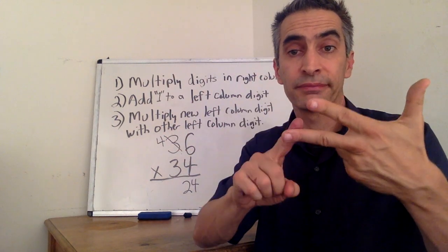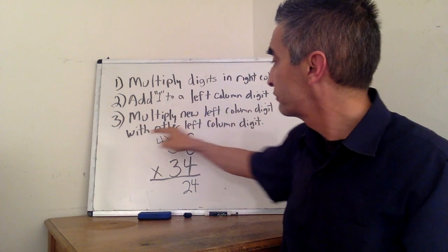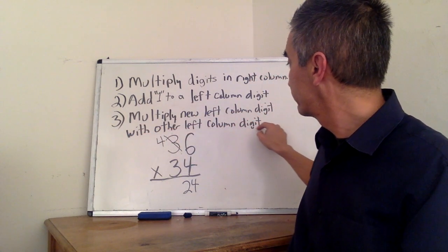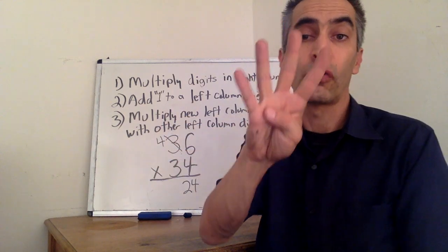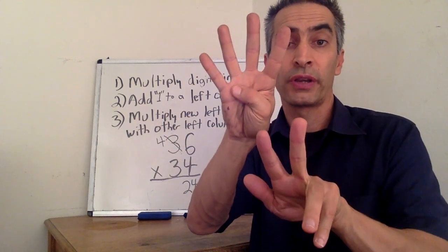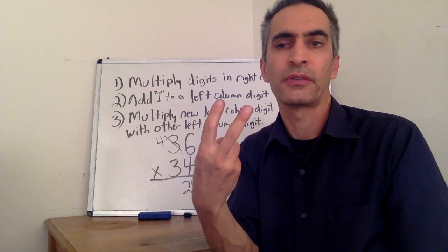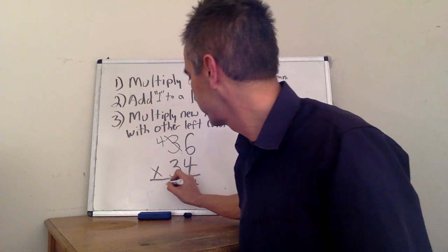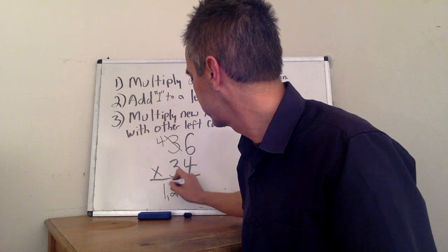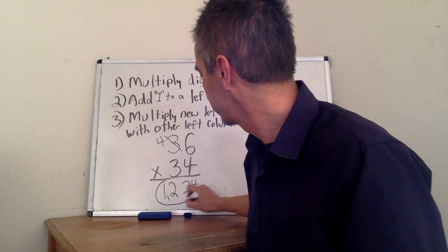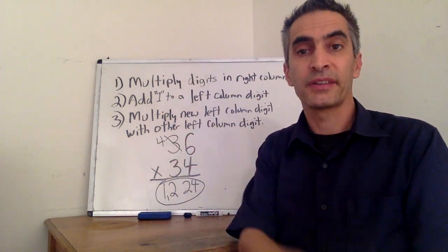Next, multiply the new left column digit with the other left column digit. 4 times 3 equals 12. And we're done.